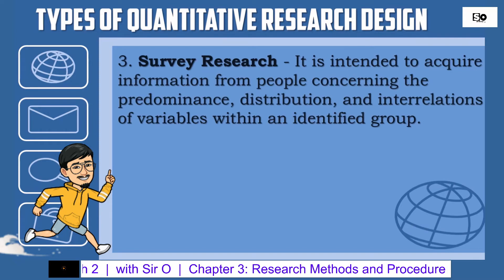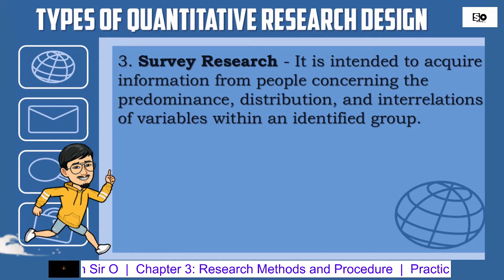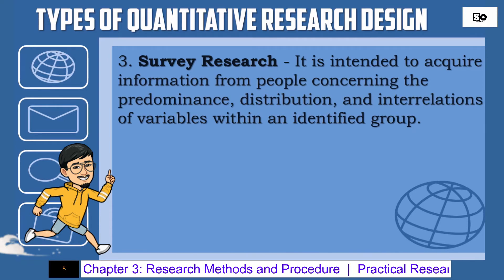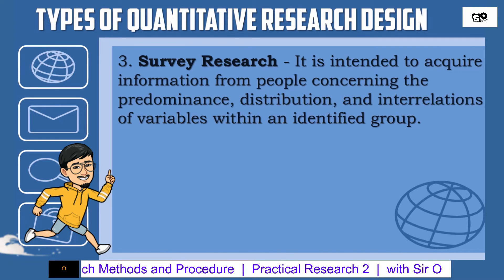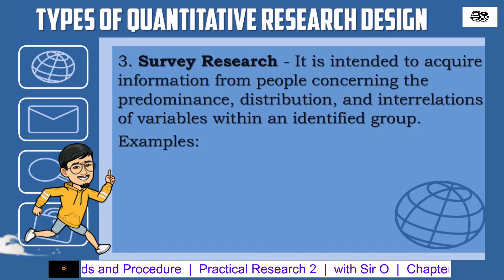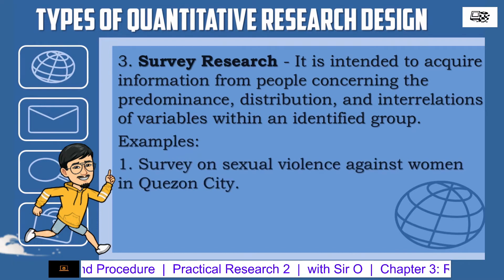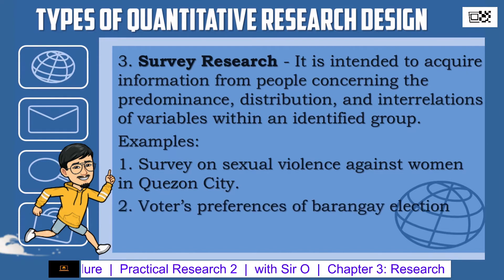Number 3: Survey Research — it is intended to acquire information from people concerning the prevalence, distribution, and interrelations of variables within an identified group. In simple terms, surveys are done to gather evidence of people's knowledge, opinions, attitudes, and values on various issues and concerns. Surveys are used for collecting data that are mainly quantitative. Examples: 1. Survey on sexual violence against women in Quezon City. 2. Voters' preference of barangay election.